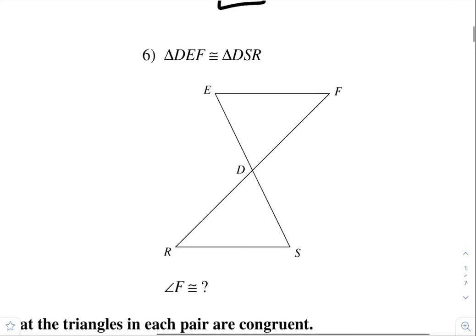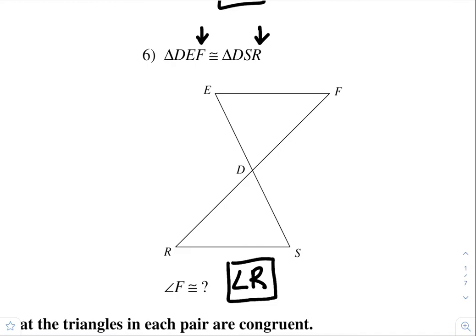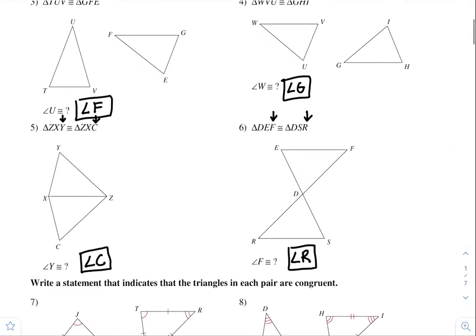Lastly, number six. It says these two triangles are congruent to each other. Angle F has to be congruent to what? Well, angle F, since it's the last letter, is also congruent to the last letter of the other triangle. So, angle R.